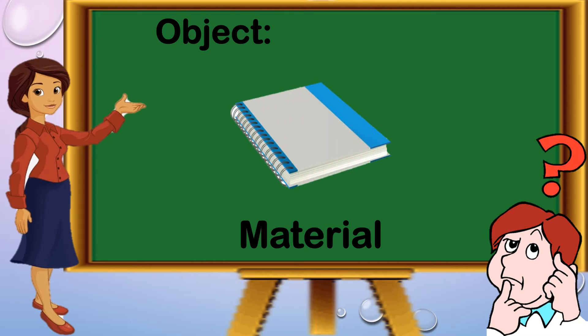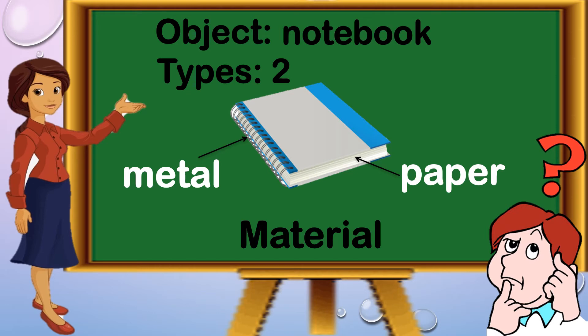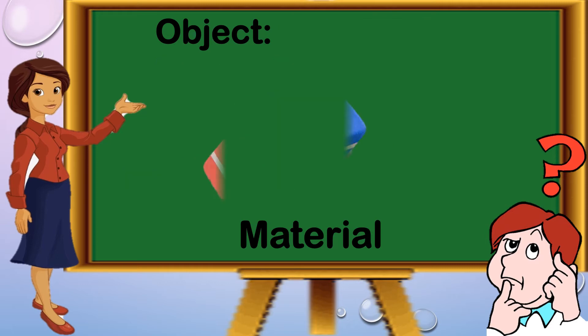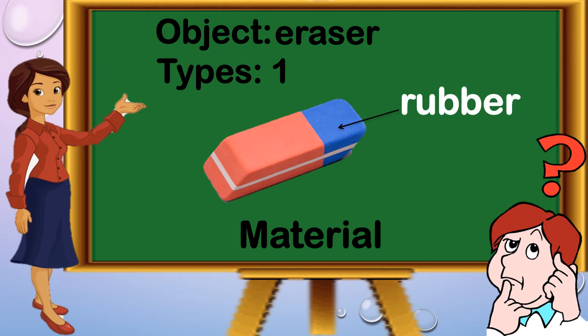Another example is notebook. We have two types of material. The string is made up of metal and the pages are paper. This notebook is made up of two types of material: metal and paper. Another object is eraser — we have only one type, that is rubber.